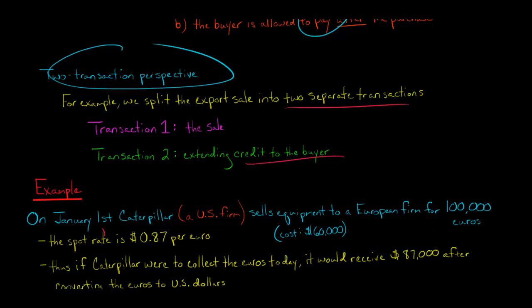Now, the spot rate, the exchange rate at the time of January 1st, when we're actually making the sale, is $0.87, so $0.87 per euro. So if you had $0.87 of U.S. dollars,